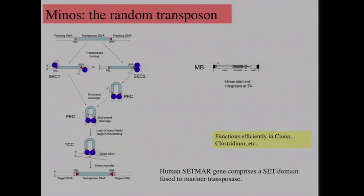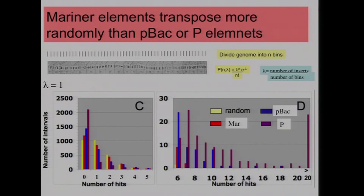What you're going to see is that each transposon is a unique entity that interacts with the genome in a unique way, quite different among transposons. Knowing this is actually rather useful if you're interested in using transposons to engineer genomes. Many of these transposons will work in just about any genome that you put them in. Our Mariner class element, called Minos, integrates at TA sites — of which there are many throughout the genome — and functions widely in organisms from Ciona to Clostridium.